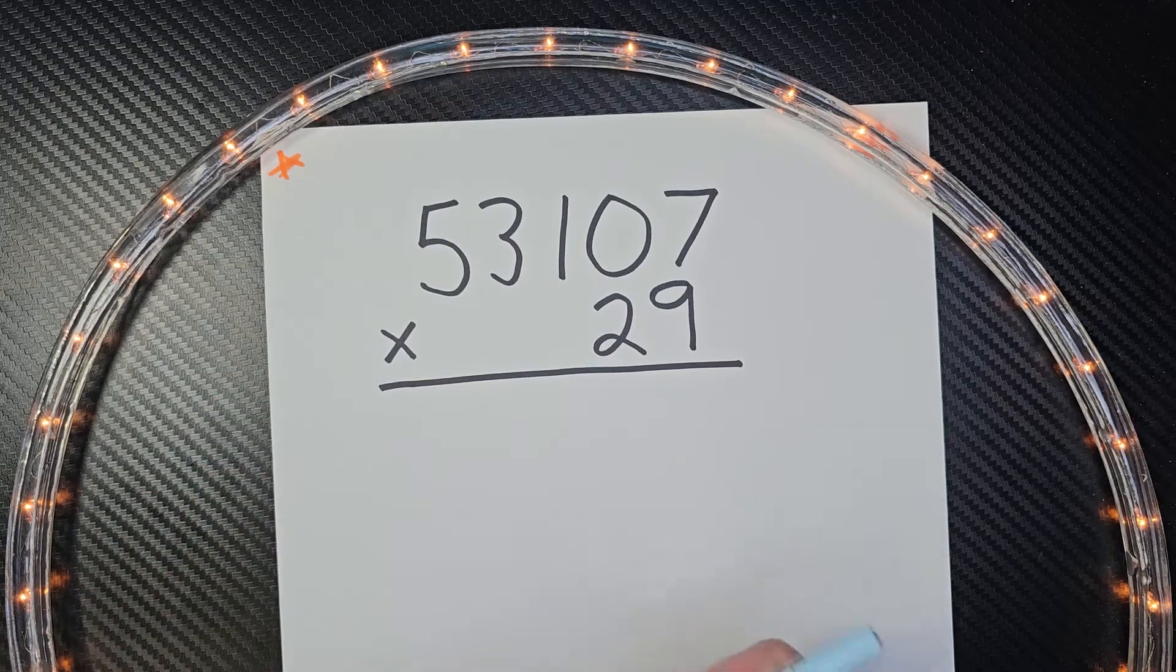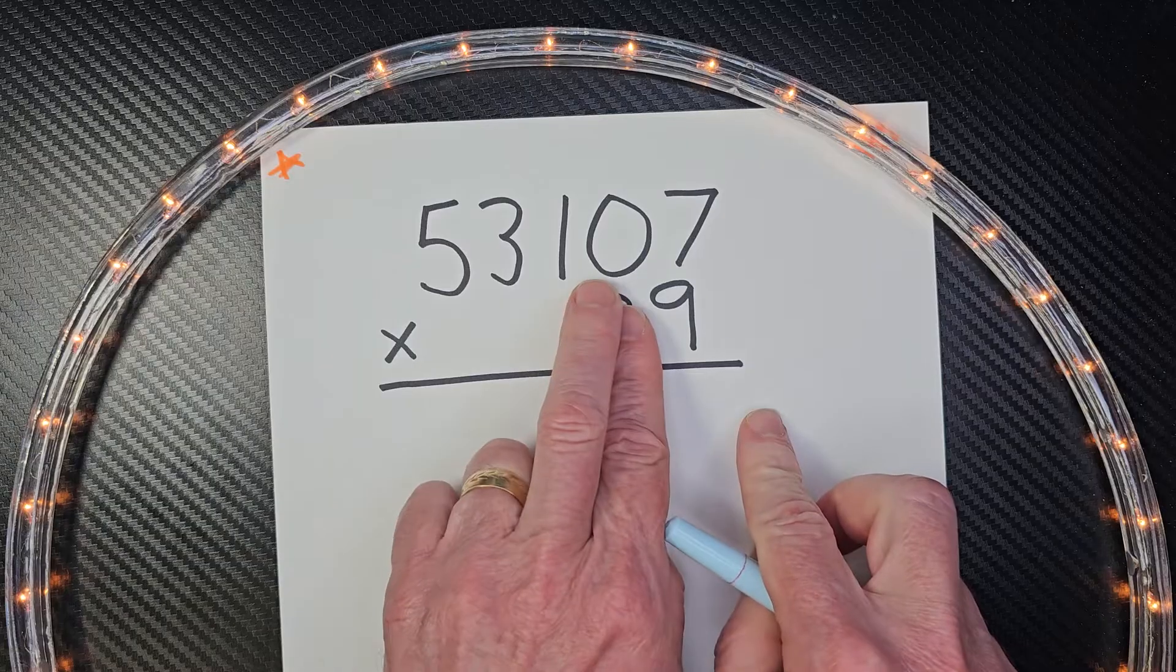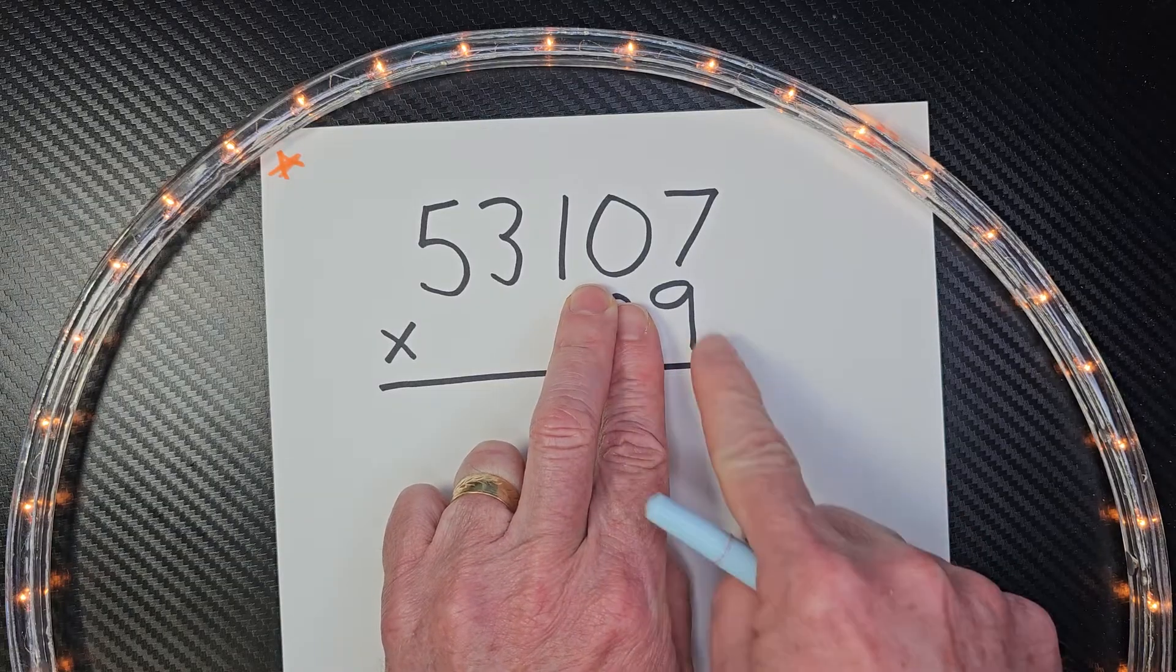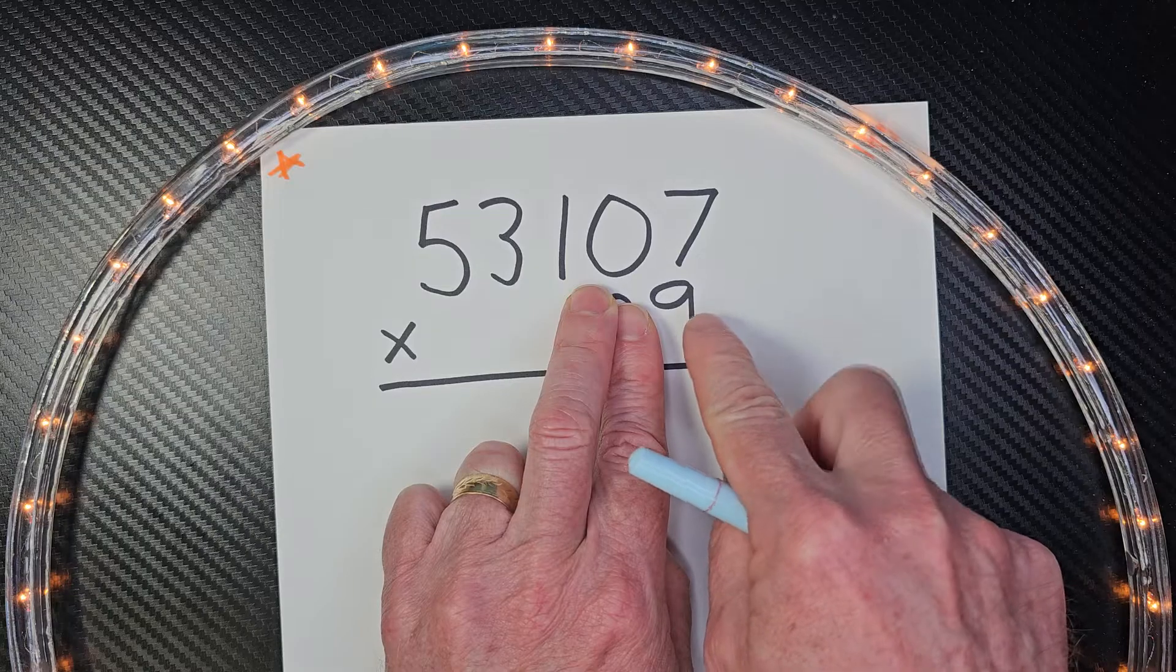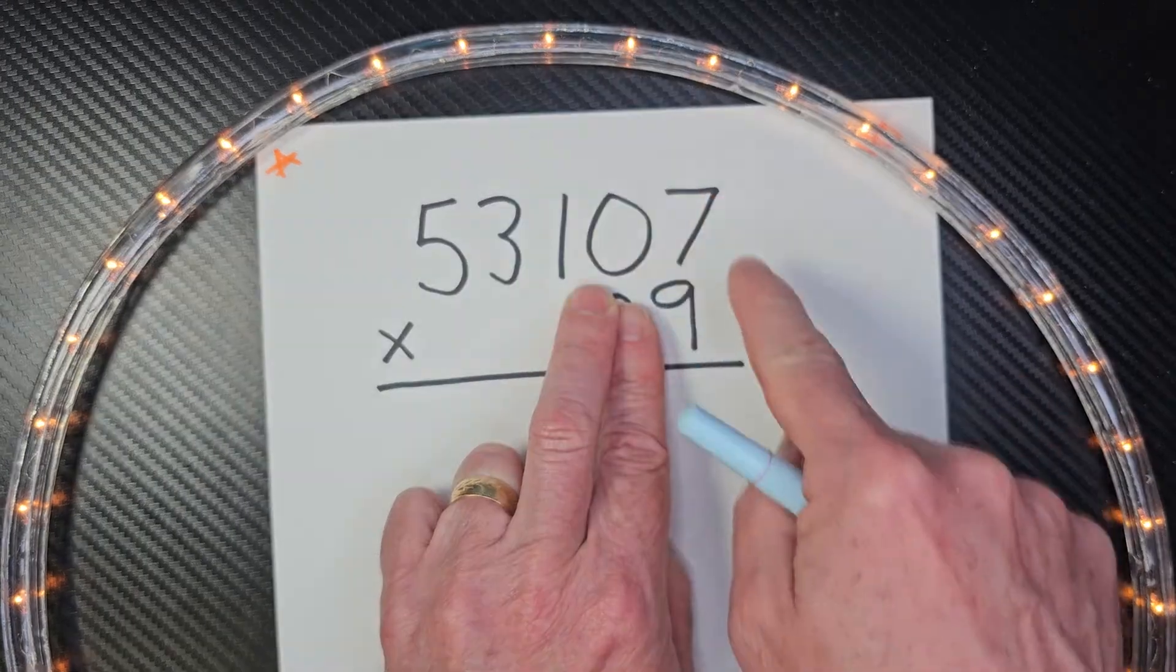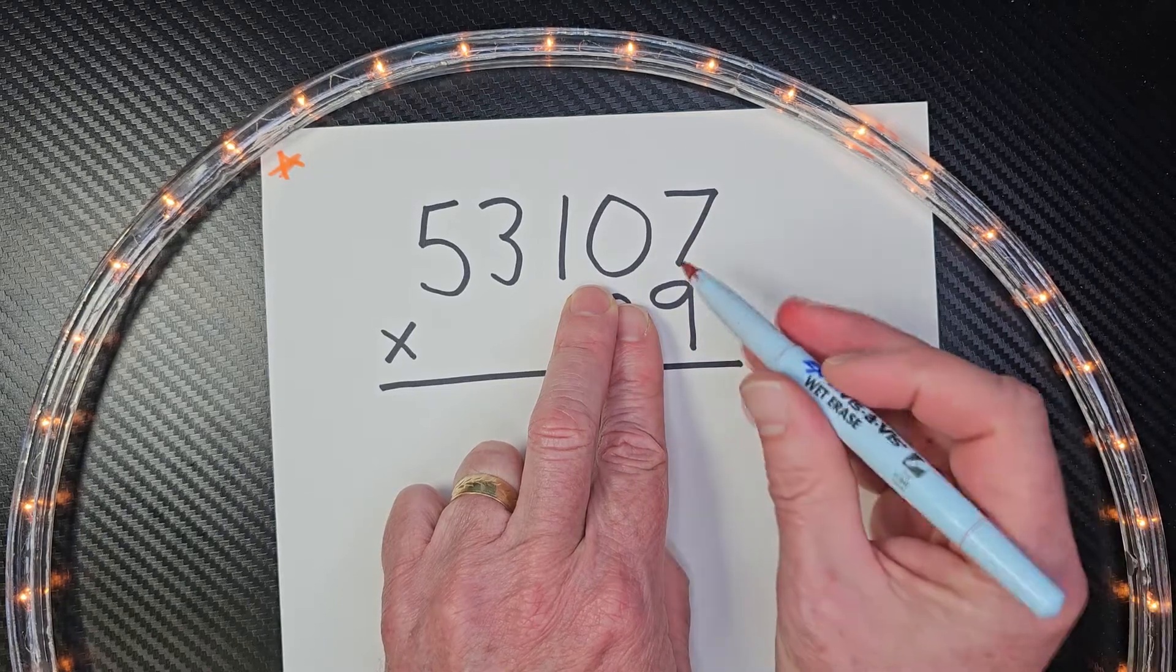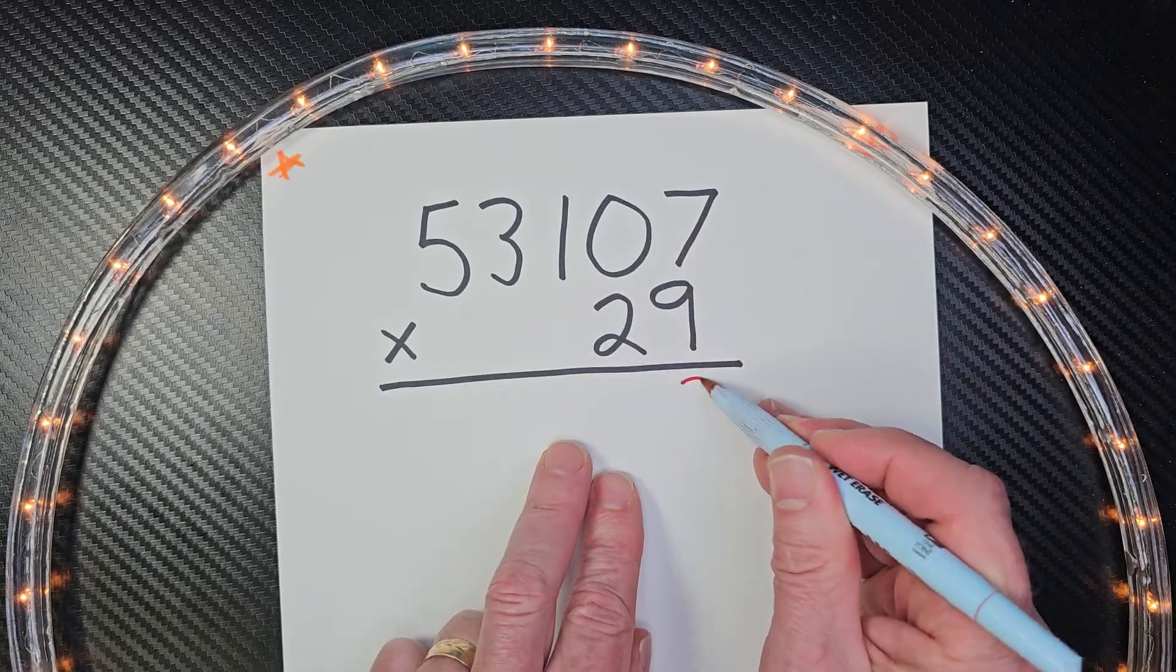All right, let's begin, my math ninjas. We're going to start with the nine. If you need to, you can cover that nine up, don't even look at it, and just worry about taking nine and multiply it by this number here. We're going to start with the seven, so we're going to take nine times seven is 63.